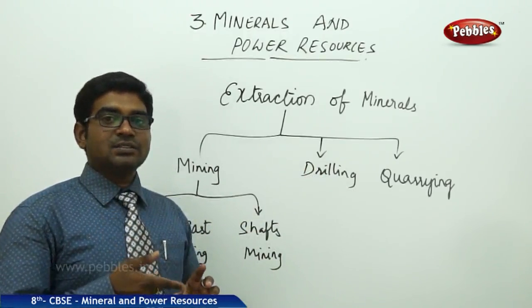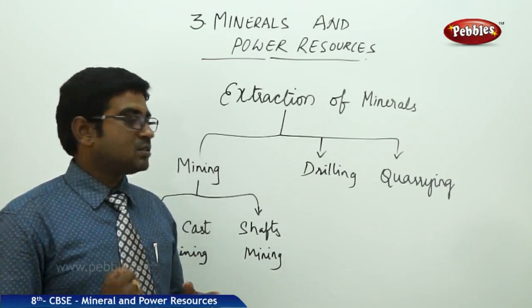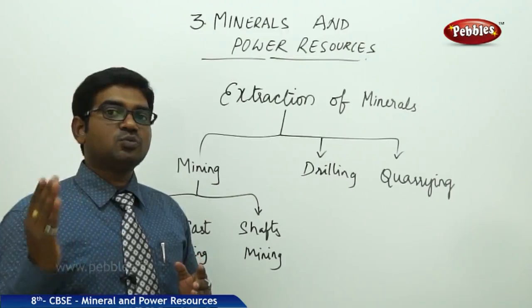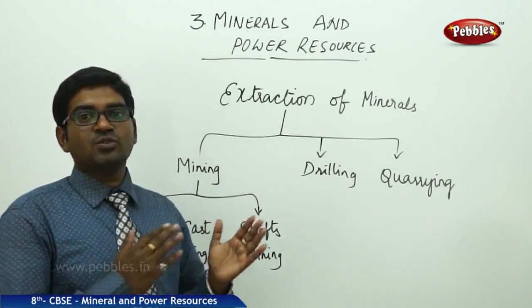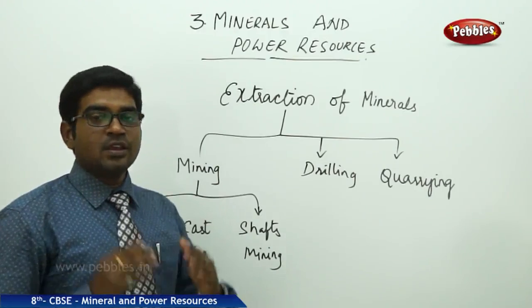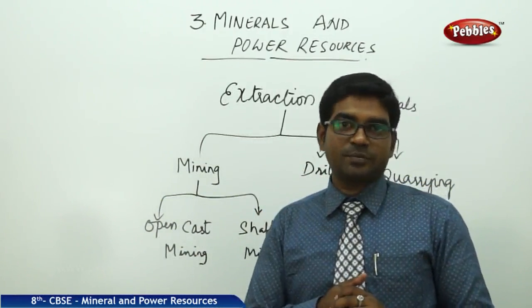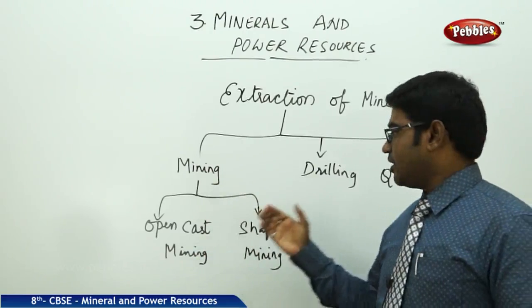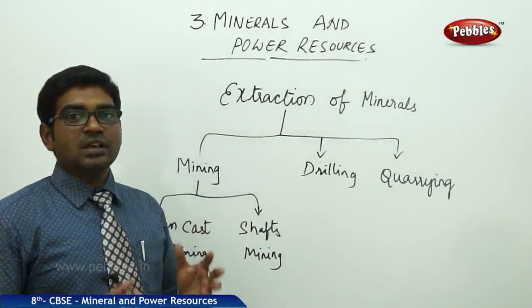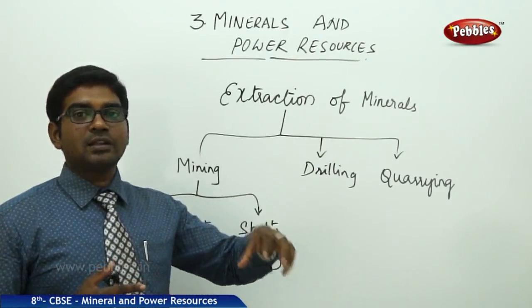In drilling, the layers of the earth are drilled and miners go inside to extract minerals. In quarrying, layers are removed by breaking hills into small particles, and the quarry stones are transported to other places to get the minerals out. All these methods — open cast mining, shaft mining, drilling, and quarrying — are used to extract minerals from different layers of the earth buried under rocks.